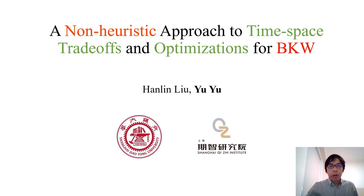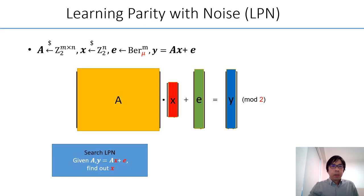Hello everyone, I'm going to talk about our work: a non-heuristic approach to time-space trade-offs and optimizations for BKW. First, let us recall the LPN problem, which is about solving linear congruence in presence of noise. In the search version of the problem, it challenges to find out the secret x given the noisy codeword.